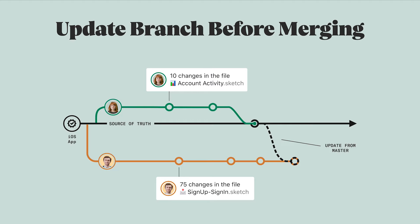Finally, what happens to your files when you click this button? Updating your branch essentially takes all of the changes that had been added to the master files and brings those changes into the files on your working branch. In this example, Mika has been working on the account activity file and Antonio has been working on the signup and signin file. Mika merged her changes in the account activity file first, so the master account activity file has been updated with her designs. Before Antonio can merge his branch back in, he needs to update his copy of the account activity files from the new version in the master, and he can do that by clicking the Update from Master button.